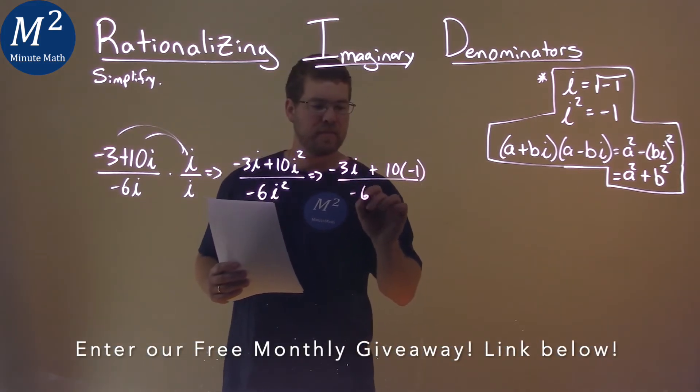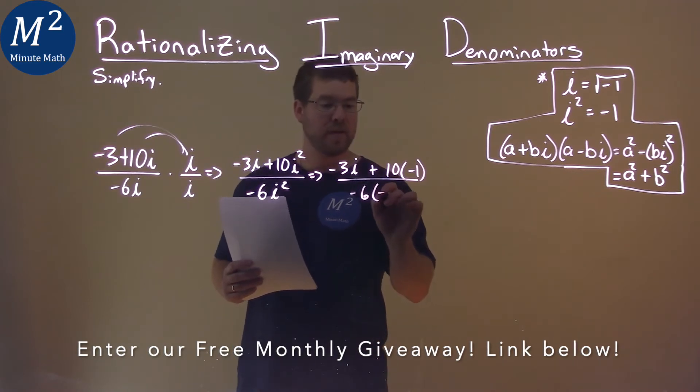over, and then negative 6 times, well, i squared being negative 1.